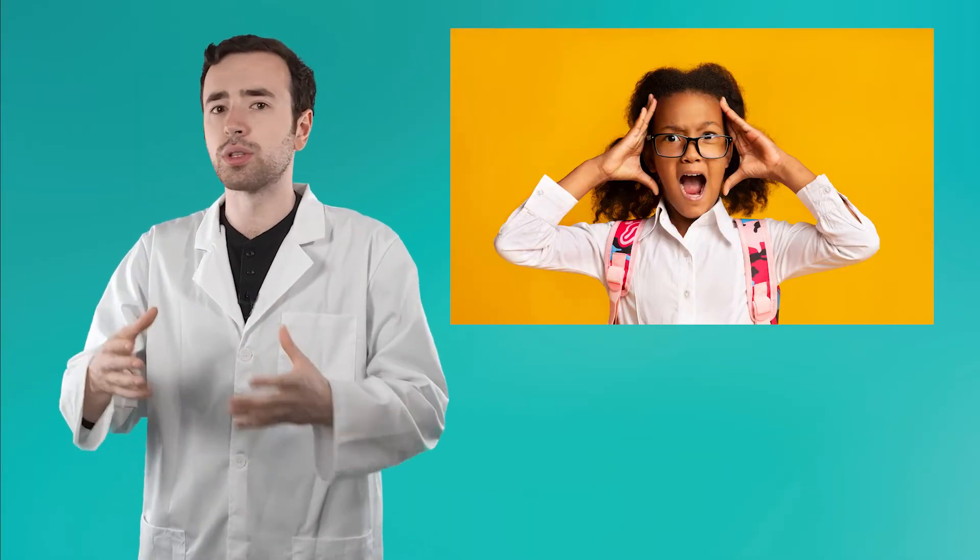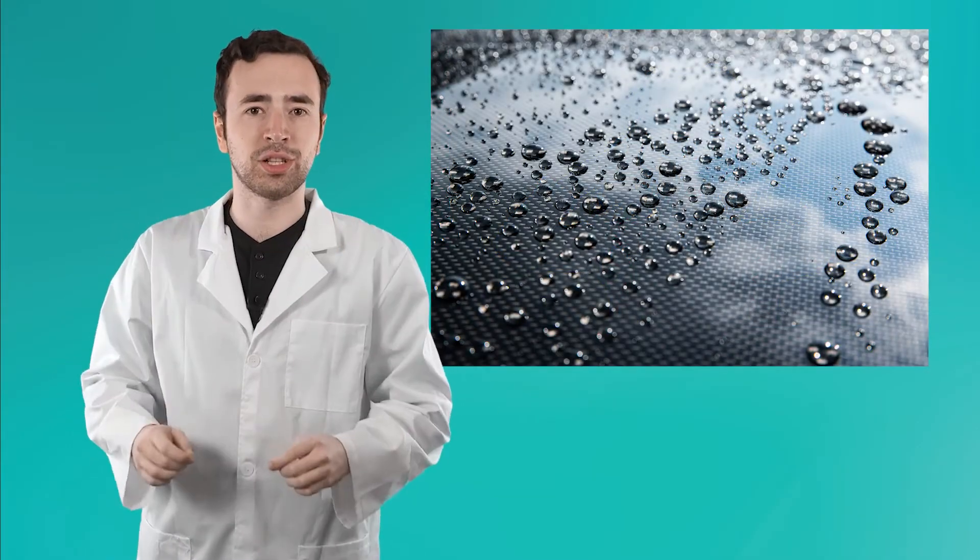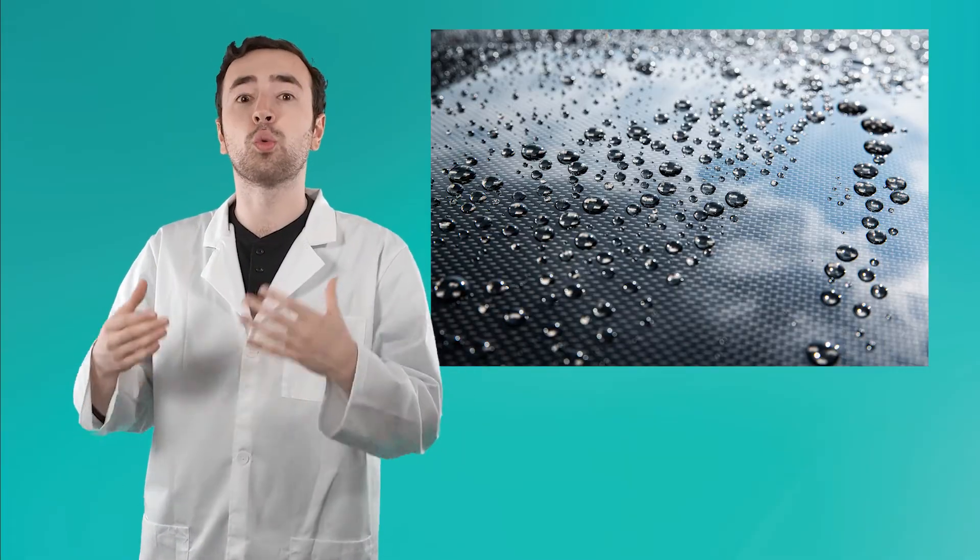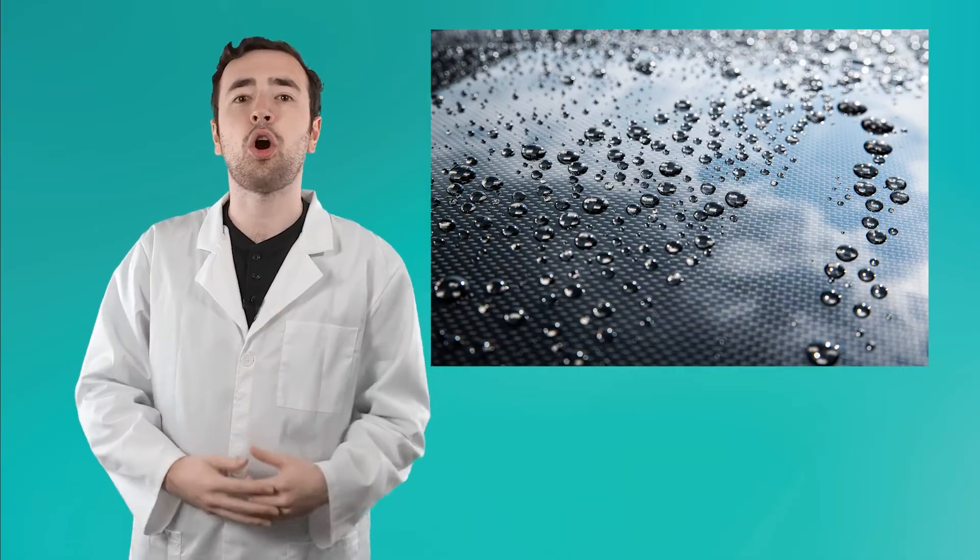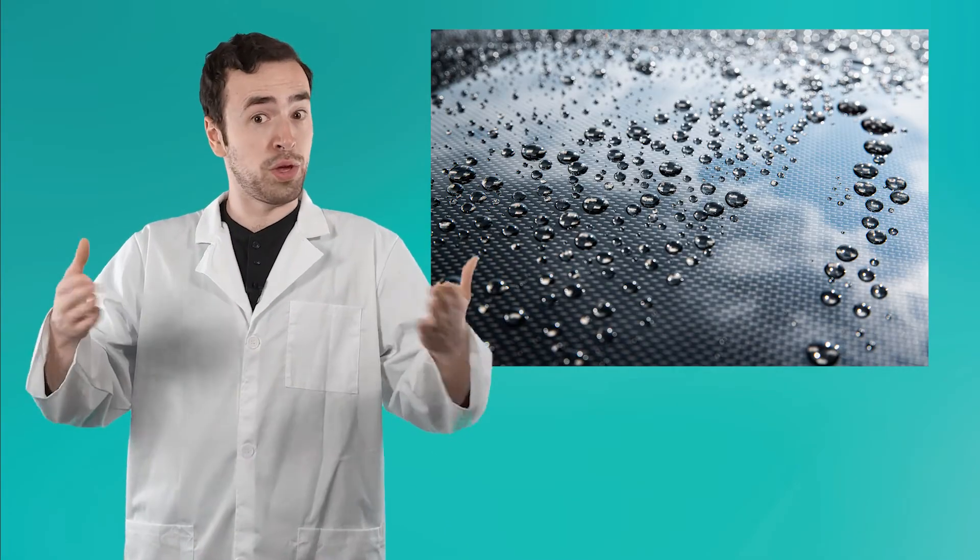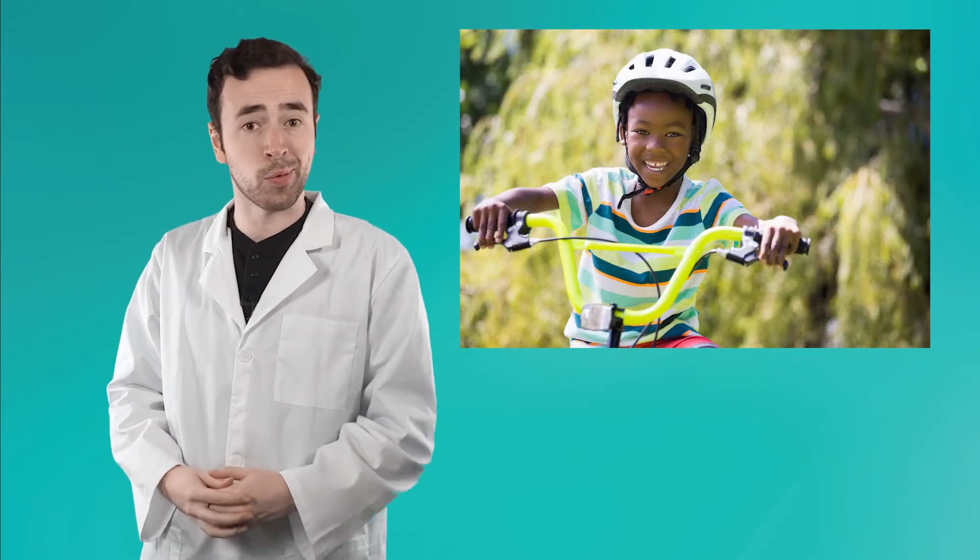We can use our understandings and our predictions to help make important decisions. For example, we know that certain metals will rust in the rain, so we can decide to build cars using waterproof materials. Or we know that our brains are super important, so we can decide to always wear a helmet when we're riding our bikes.